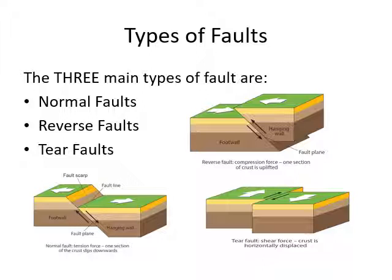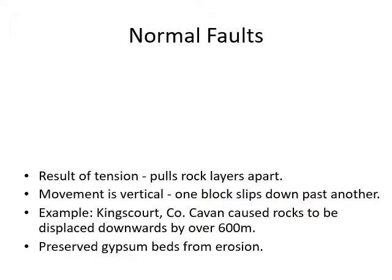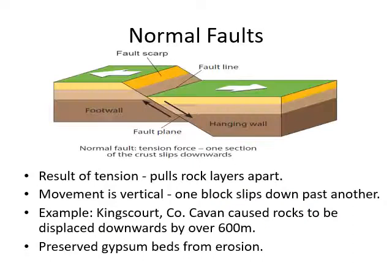Normal faults are a result of tension - NFT, no flipping talking in class. Rock layers are pulled apart, movement is vertical. We find this in Kingscourt, County Cavan, where it's preserving chips and beds from erosion. The only reason they can mine it and know it's there is because you've had this downward slip of a block of the earth's crust due to tension.